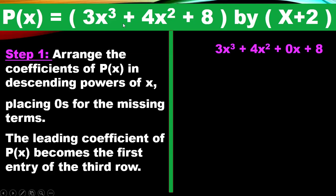Our dividend is 3x³ + 4x² + 8. If you observe, we have a missing term: the x term is absent. Based on the step, we place 0 for the missing term, which is 0x. So now we have 3x³ + 4x² + 0x + 8.